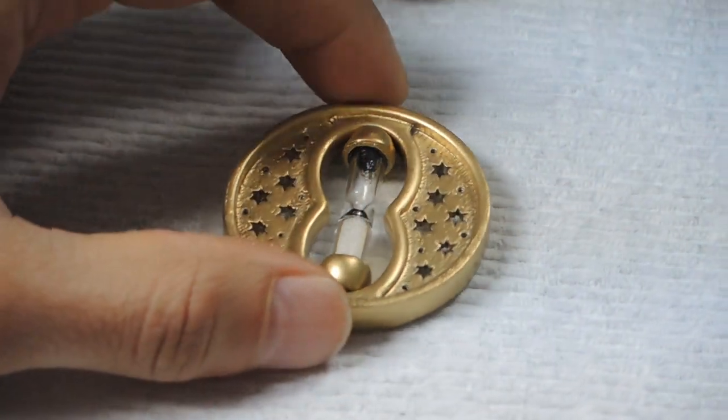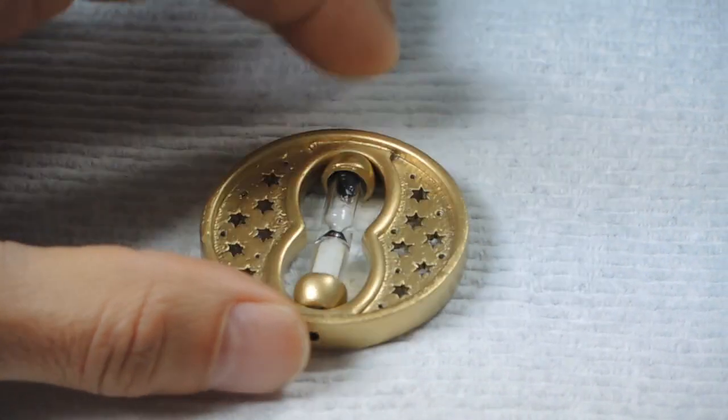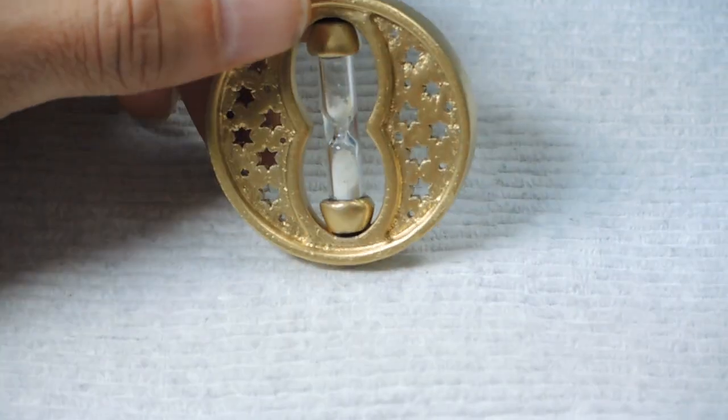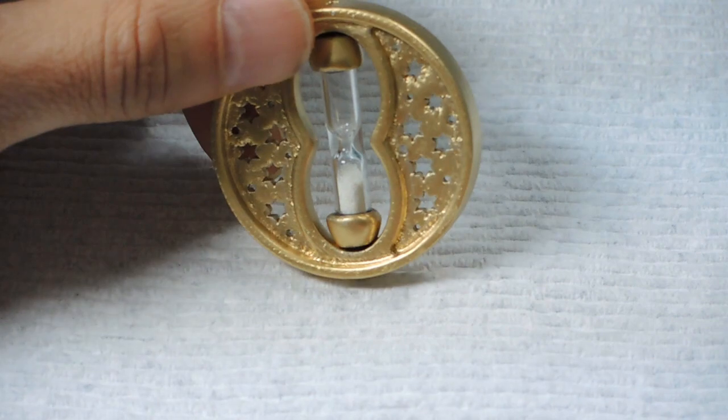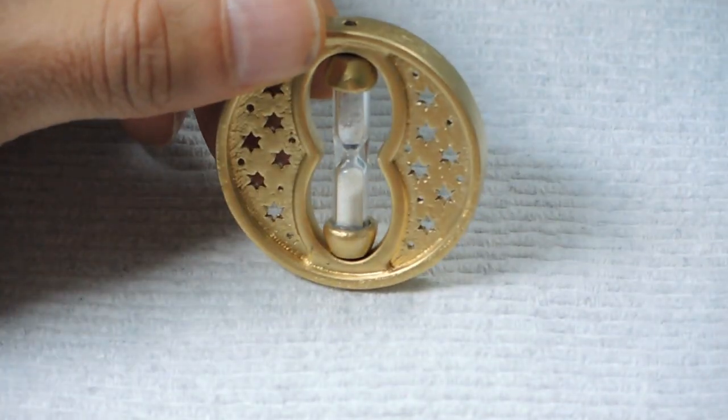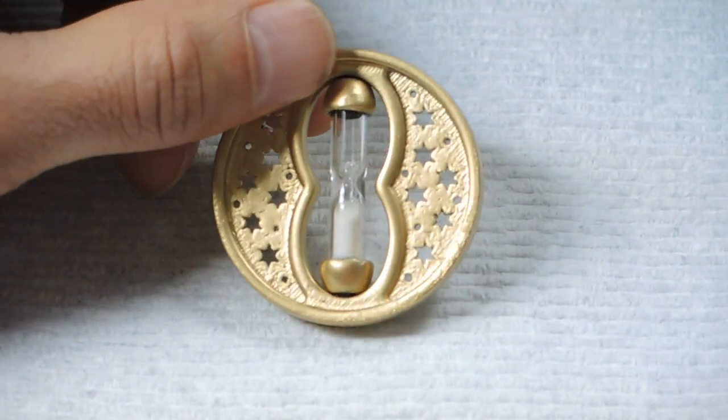This is the completed inner disc assembly. The two caps have been bonded onto the hourglass, and then the hourglass and caps have been bonded into the inner disc, being careful to not let the epoxy show.